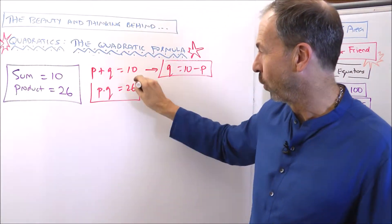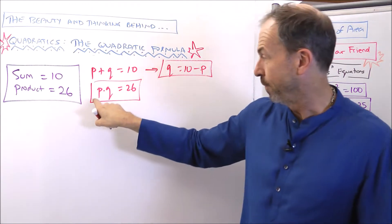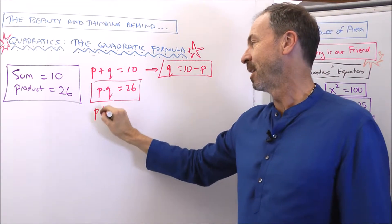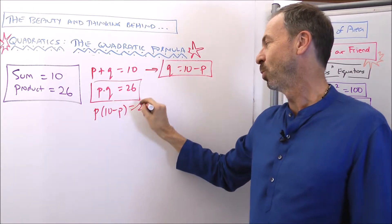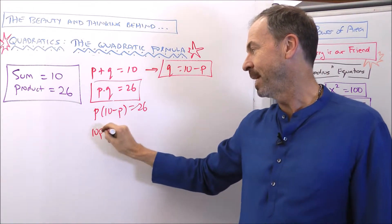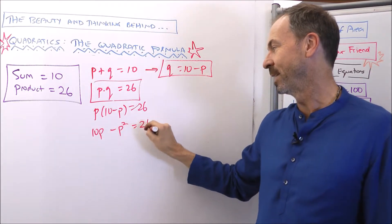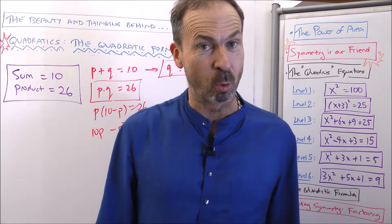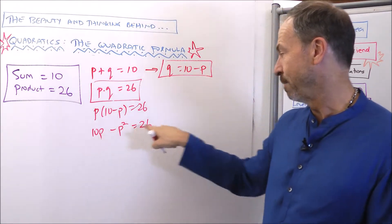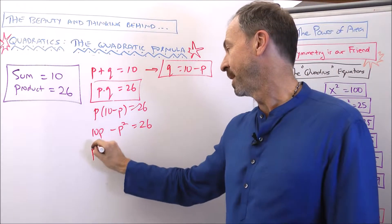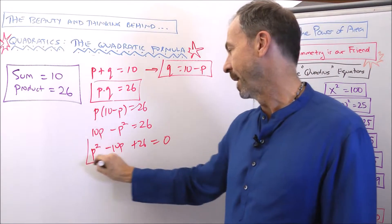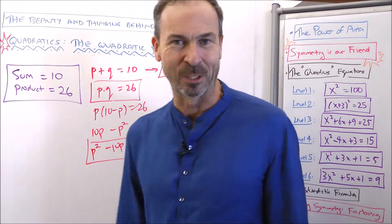Alright, so let's look at the second equation, focusing on P. P times Q, well, Q is 10 minus P. P times 10 minus P is 26. Let me expand this out. 10P's minus P squared is 26. And we have a quadratic equation in P. I might bring the P squared on this side and the 10P on this side. So, think of this as P squared minus 10P plus 26 equals 0. Great. So, there's my quadratic equation.